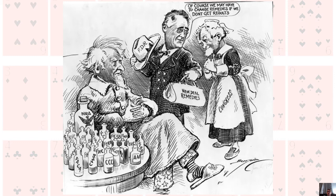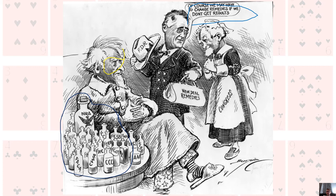In FDR's day, the sheer staggering number of New Deal acts seemed to suggest to many Americans that FDR was making things up — Uncle Sam's got quite a bit of medicine, seems to be taking everything and not doing any better for it. FDR told Congress that we may have to change remedies if we don't get results — which is very much a progressive idea. We call that pragmatism: we do something to see if it actually gets the result we want, and if it doesn't, we do something else. To other folks, this was not quite reassuring — did FDR have a plan? Did he know how to really solve the problems, or was he just trying a whole bunch of things and hoping something works?